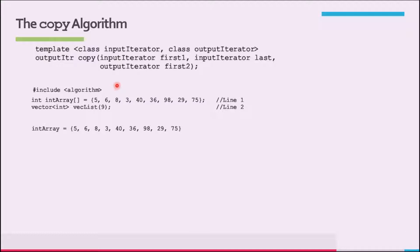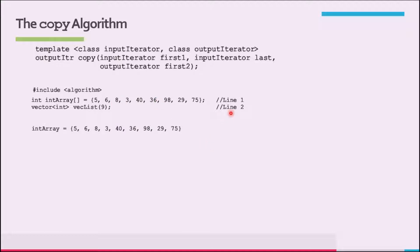The function copy works as follows. Consider the following statements: an int array with values 5, 6, 8, 3, 4, 36, 9, 8, 29, and 75 — with the size automatically determined — and then a vector of int, vectlist, of size 9. The statement in line 1 creates an int array of 9 components, where int_array[0] is 5, index 1 is 6, index 2 is 8, and so on. The statement in line 2 creates an empty vector container, vectlist, of 9 components of element type int.